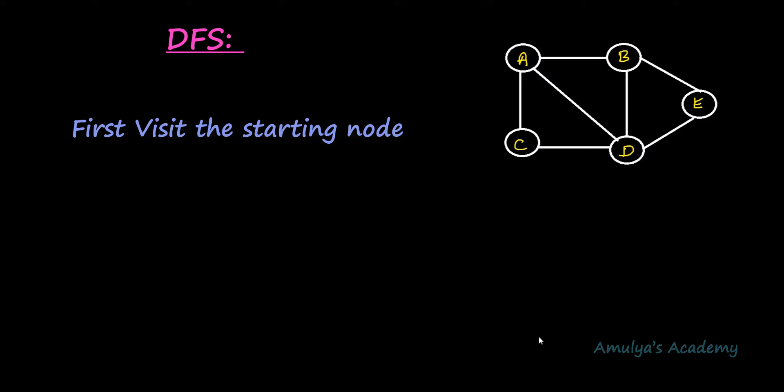If I want to traverse a tree — a tree is also a special type of graph — in a tree we have a special node called the root node, so we begin traversal from the root node. But in a graph we don't have any special node; all nodes are equal. The answer is you can choose any node as the starting node. Here I will choose this node as the starting node.